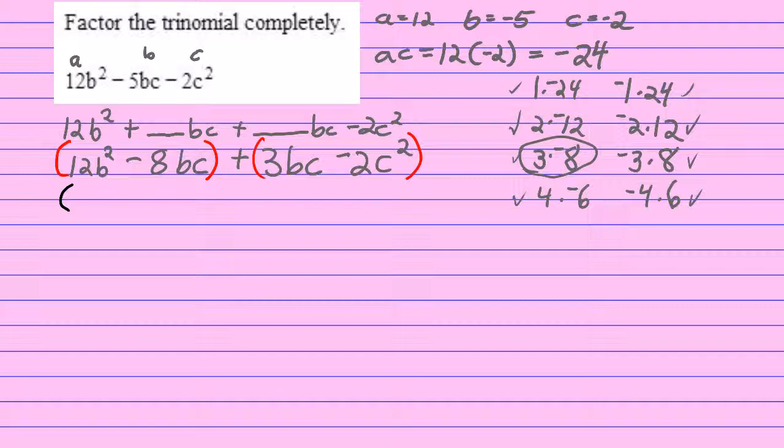12b² is going to be 3 times 4 times b times b, and 8bc—never mind—12bc is going to be 2 times 4 times b times c. I can see that each of these first two terms has a 4 and a b in it, so I'm going to circle the 4 and the b, and pull that out to the front, and then write the leftovers: a 3 and a b minus 2c.